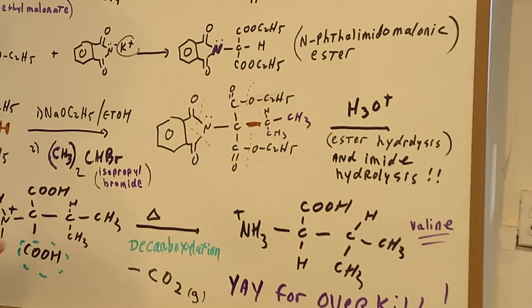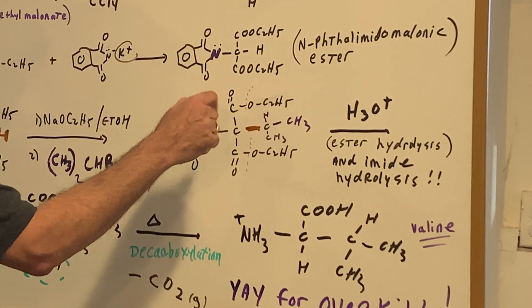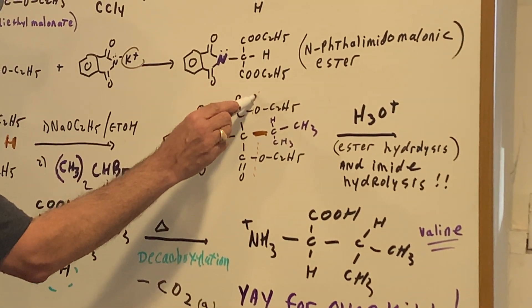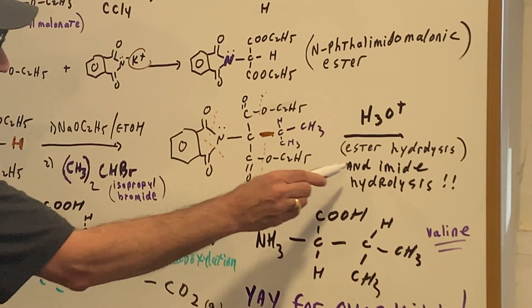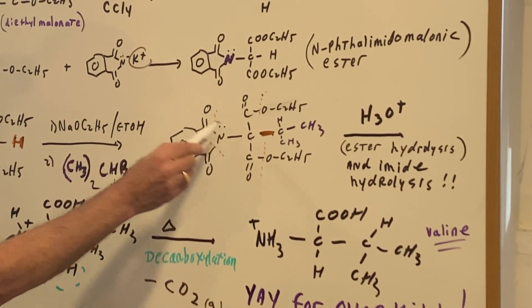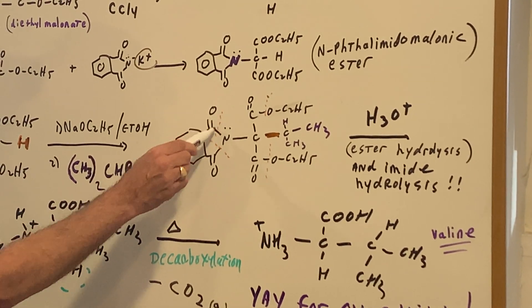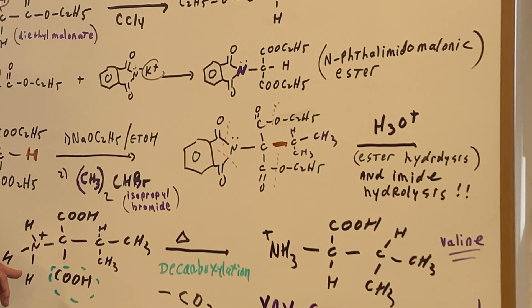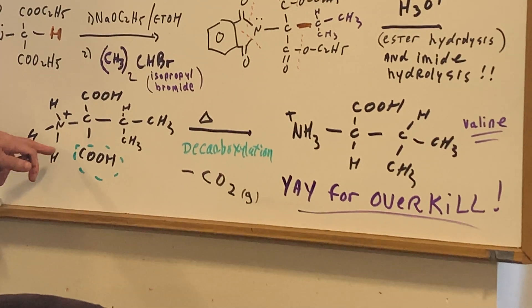Now, all I'm going to do is hit it with acid. I'm going to do an ester hydrolysis, meaning I draw the dotted lines. I break the ester down the middle, and I break the imide, which is here. So an imide hydrolysis and an ester hydrolysis. And that puts me here after we acidify it.